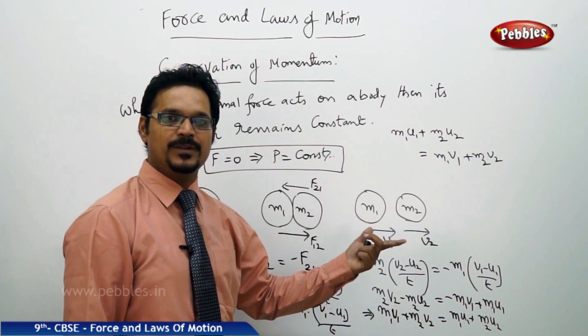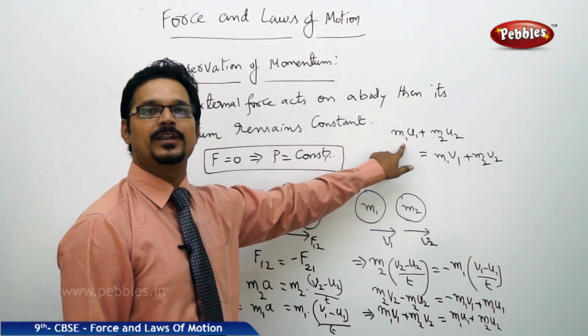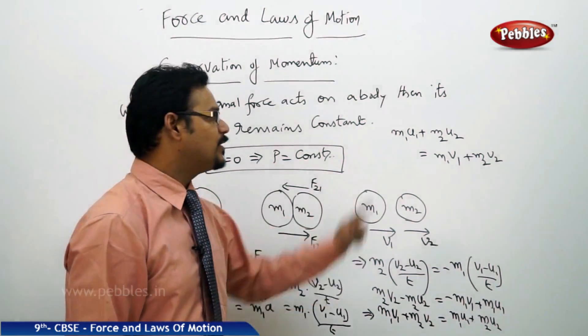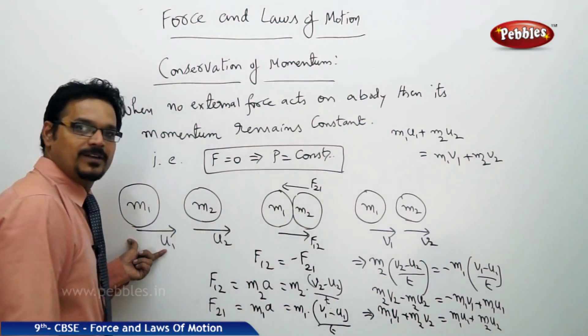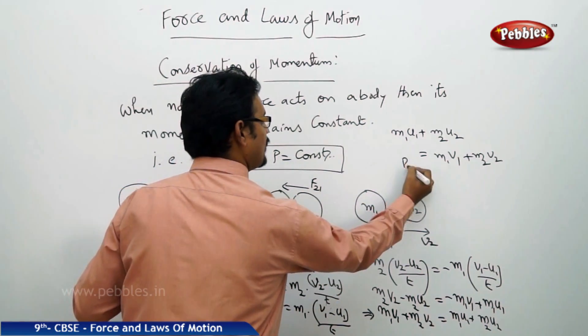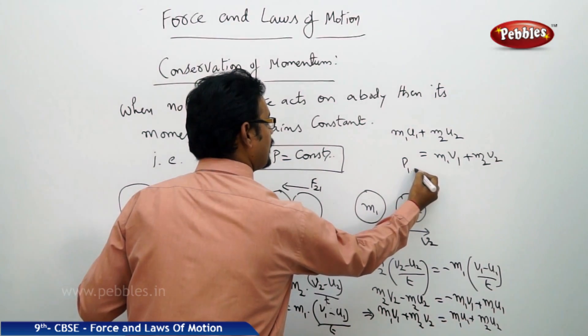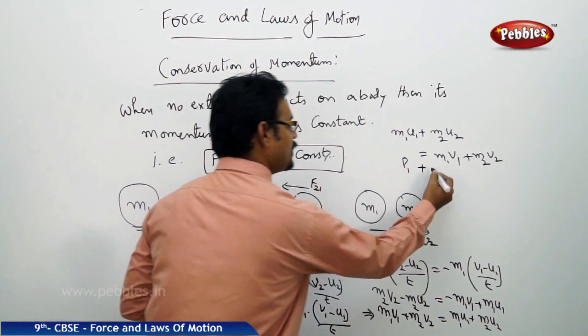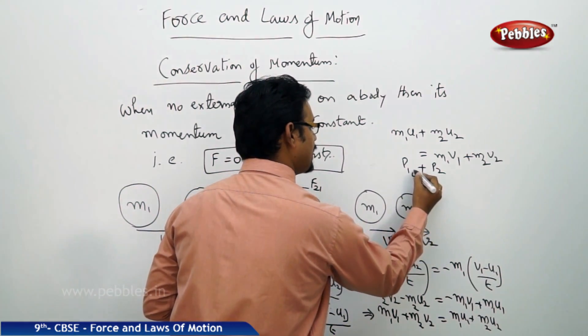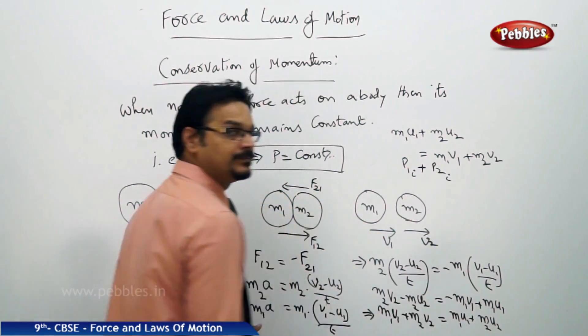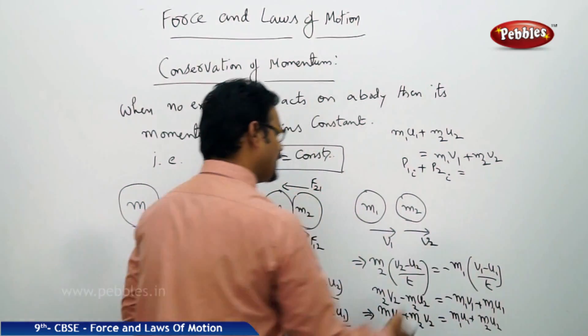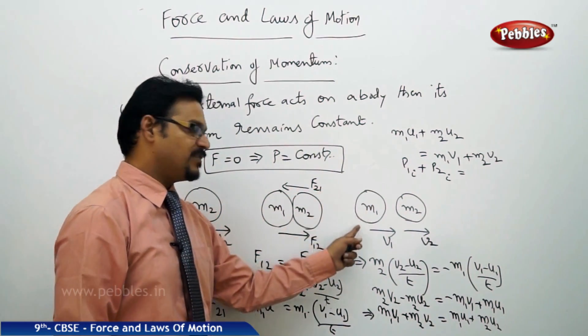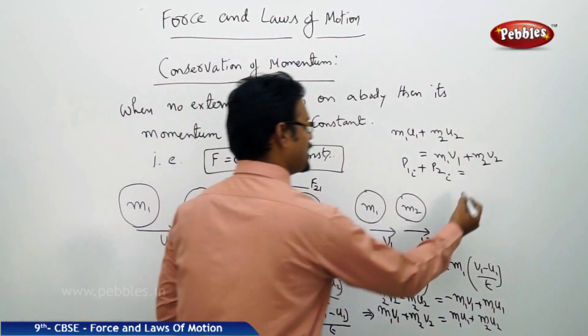This is the momentum of first body, P1. This is the momentum of the second body, P2. But these are the initial ones. Equals to m1 v1, this is the momentum of the first body, m2 v2, momentum for the second body after collision. So when I say after collision, I will write P1f means final, plus P2f.